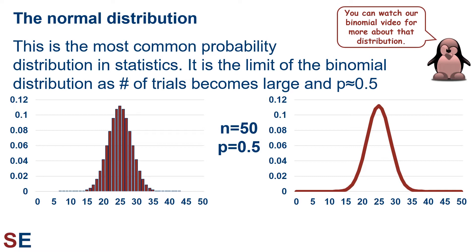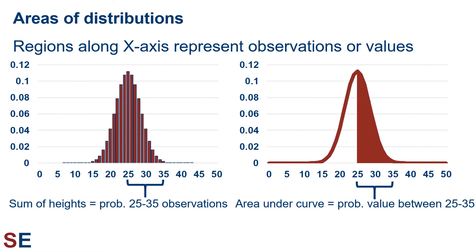Even though these two figures look different — one is a histogram and the other is a curved line — they are representing the same thing: a distribution of probability of values corresponding to values on the x-axis. As we begin to think about this normal probability distribution, it's important to remember exactly what's being represented. The histogram is showing a particular probability corresponding to each number of observations on the x-axis. If we wanted to know the probability of some particular range, seeing somewhere between 25 and 35 observations for example, we would add up those individual probabilities to create a sum. We would essentially be calculating the sum of the heights of a set of those individual bars.